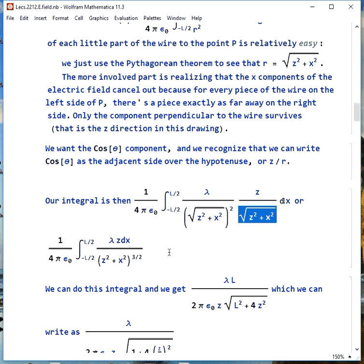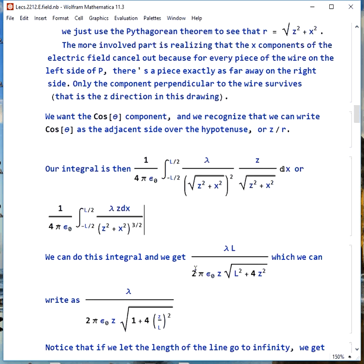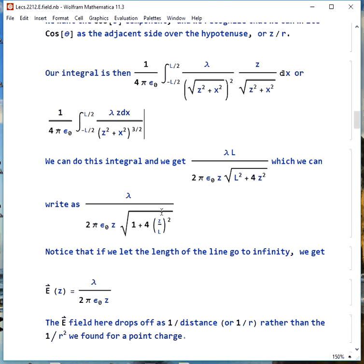This can be simplified to look like this. That's not a horrible integral. It may not be much fun, but it's certainly doable. If you do it, you get lambda l over 2π epsilon naught z, and then square root of l squared plus 4 z squared. We can rewrite that as lambda over 2π epsilon naught z, square root of 1 plus 4 times z over l squared.